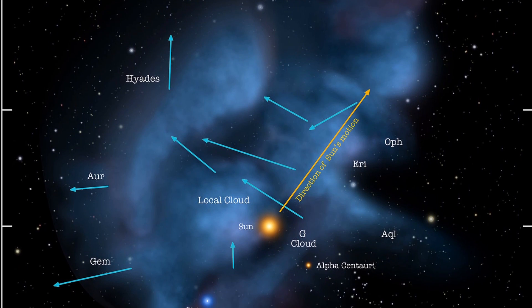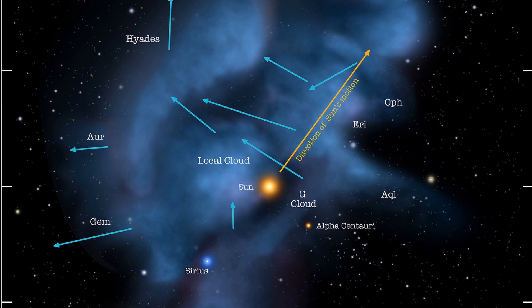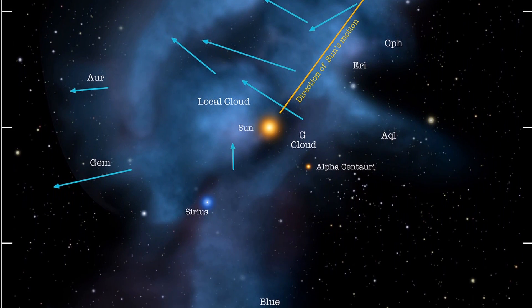But it was always believed, although never proven, that this local cloud was indeed created by some sort of an ancient supernova. The modern calculations suggest that the solar system entered this region maybe about 44 to 150 thousand years ago and is going to continue moving through this region for another 10 to maybe 20 thousand years.